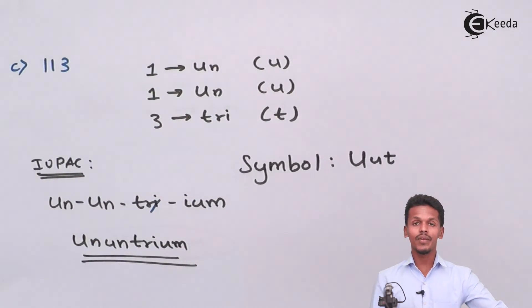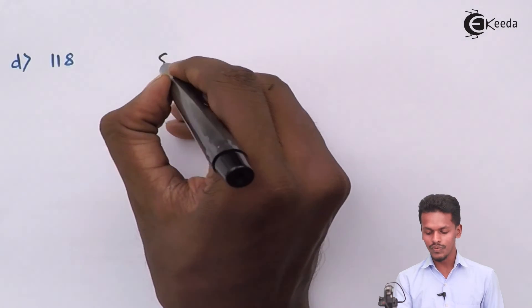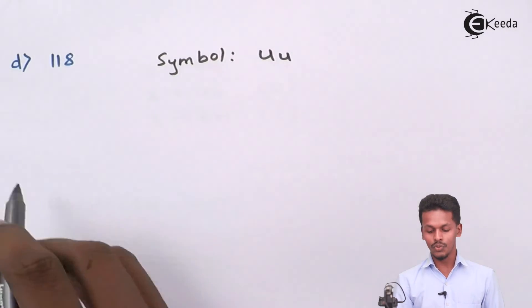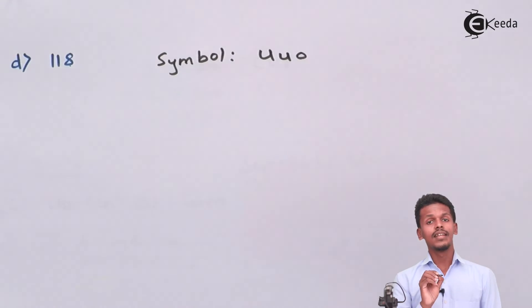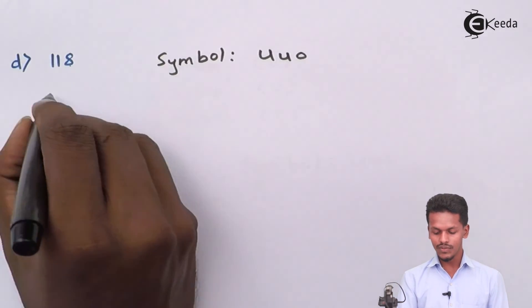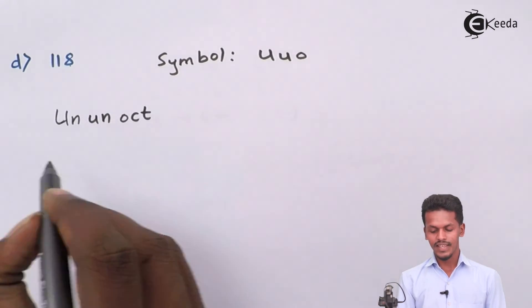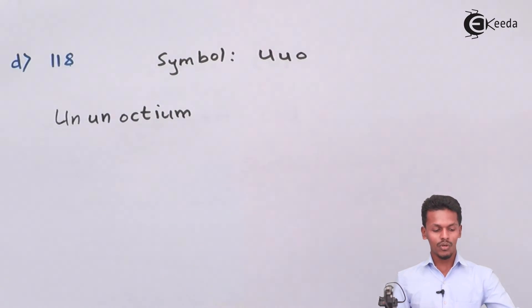For atomic number 118: the digits are 1, 1, and 8. This will be easy to calculate. The symbol abbreviations are 'u' for 1, 'u' for 1 again, and 'o' for 8 (oct). For the IUPAC name: for 1 it is 'un', for 1 again it is 'un', and for 8 it is 'oct', ending with '-ium'. The IUPAC name is 'Ununoctium'.